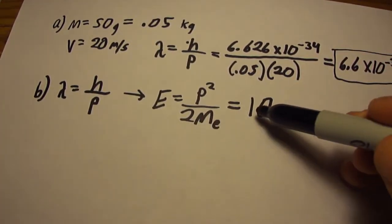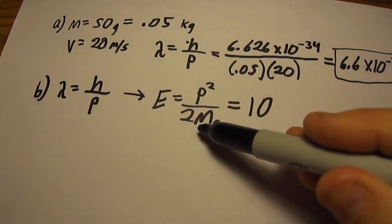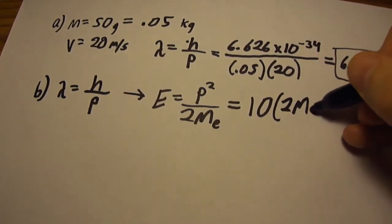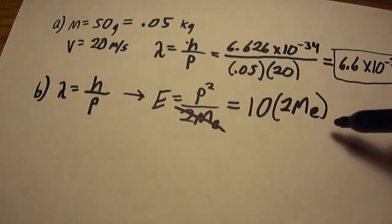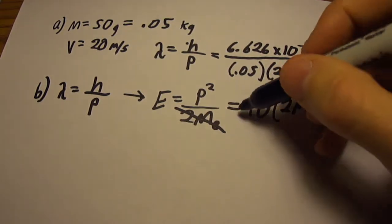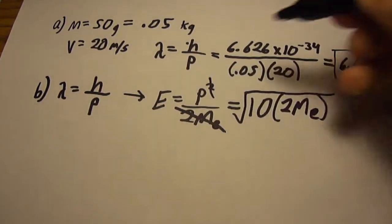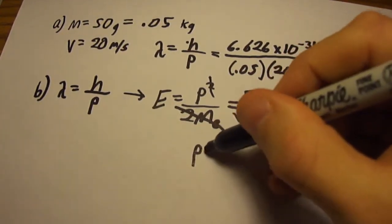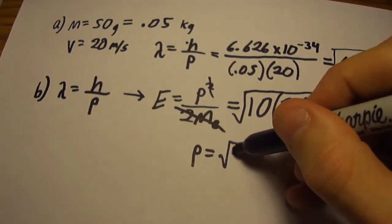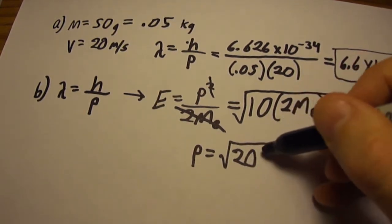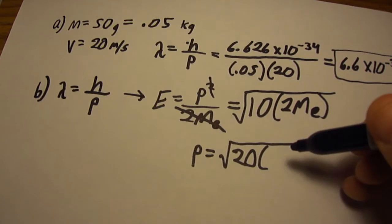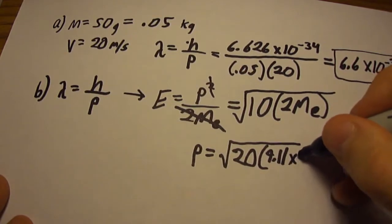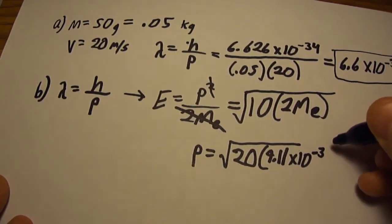To solve for momentum, we multiply both sides by 2 times the mass of the electron, then square root both sides to isolate momentum. Filling in the variables, the momentum equals the square root of 10 times 2 — which is 20 — times the mass of the electron, which is 9.11 times 10 to the negative 31st kilograms.